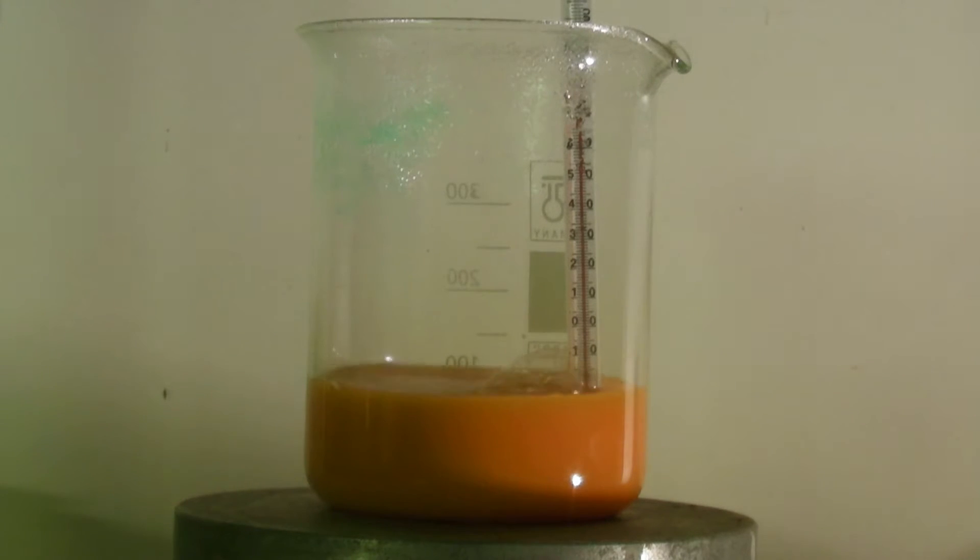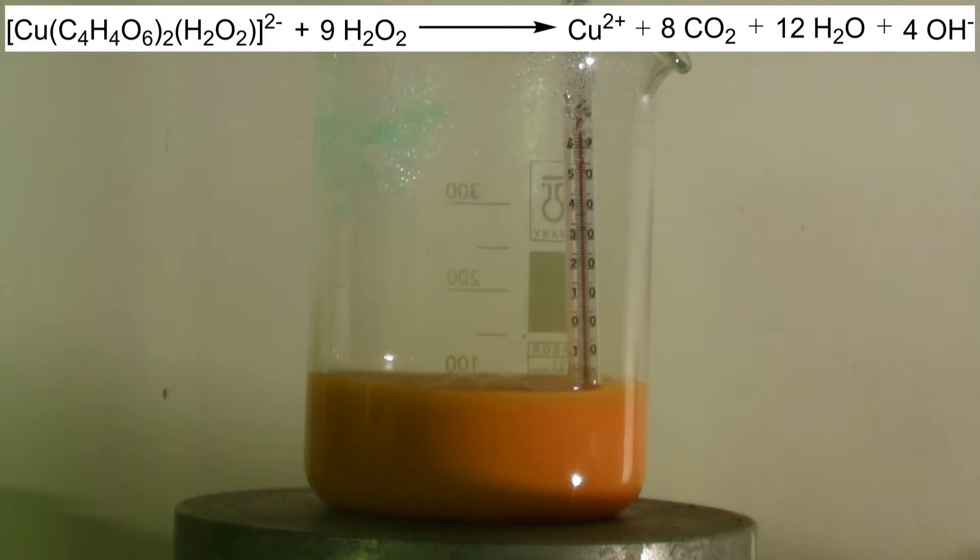The copper sulfate has formed a complex with the tartrate ions and the hydrogen peroxide which catalyzes the oxidation of the tartrate into CO2. The heat of the reaction causes the reaction rate to increase significantly.